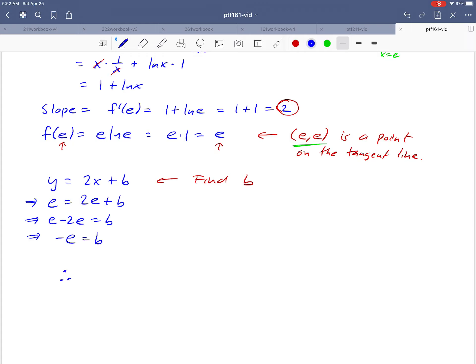And we are in a position to write our final answer. So we're just going to take the line that we started with, y equals 2x plus b, and substitute in the b that we just found. b is negative e. So the final formula for the equation of our line is y equals 2x minus e. And there it is.